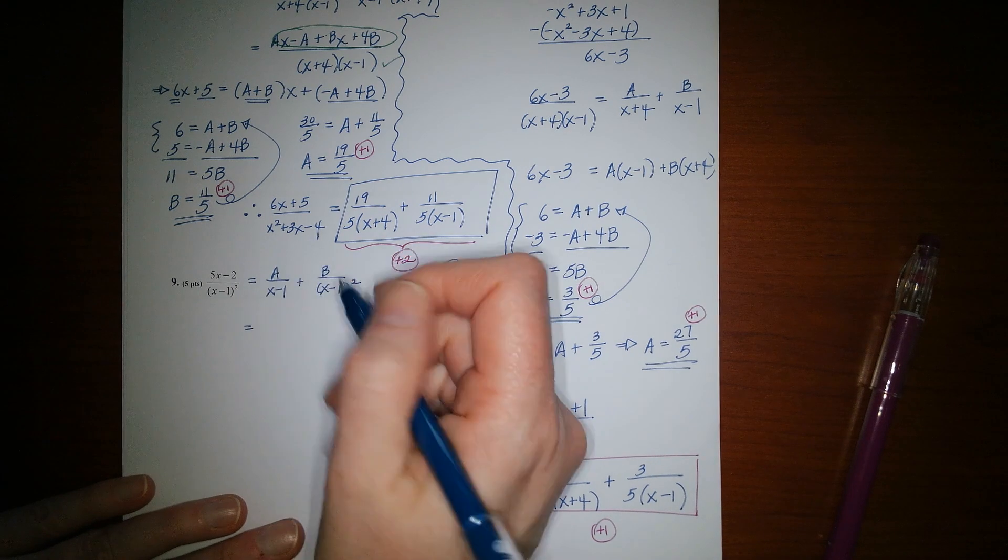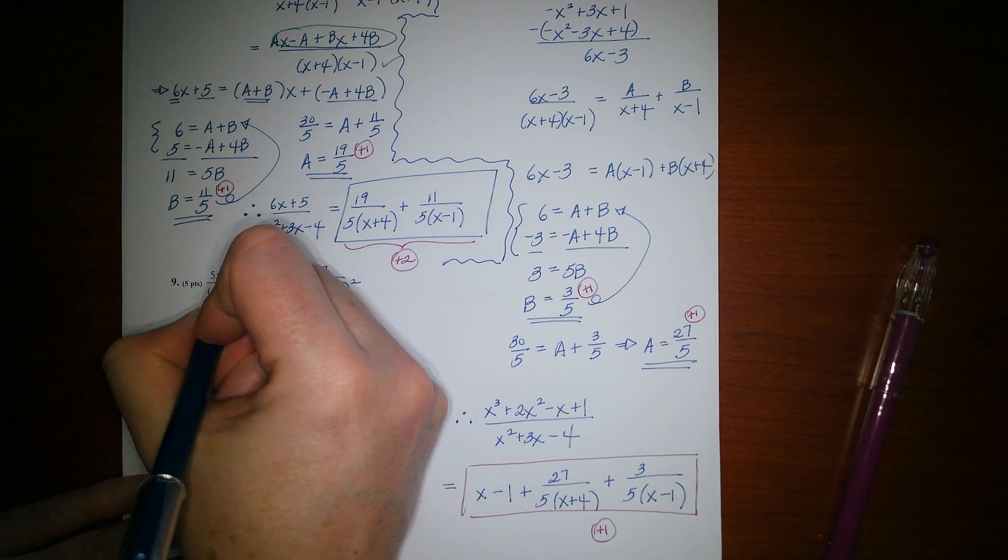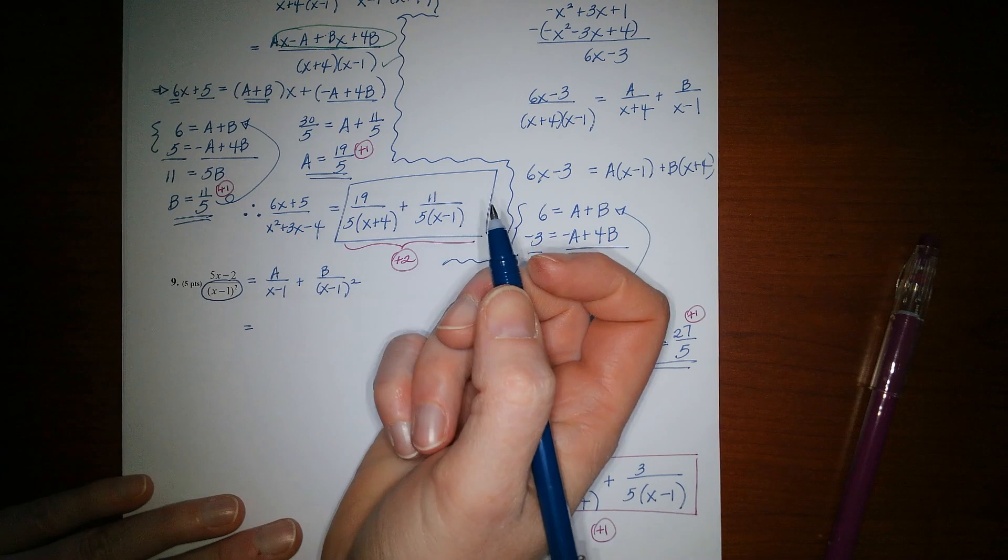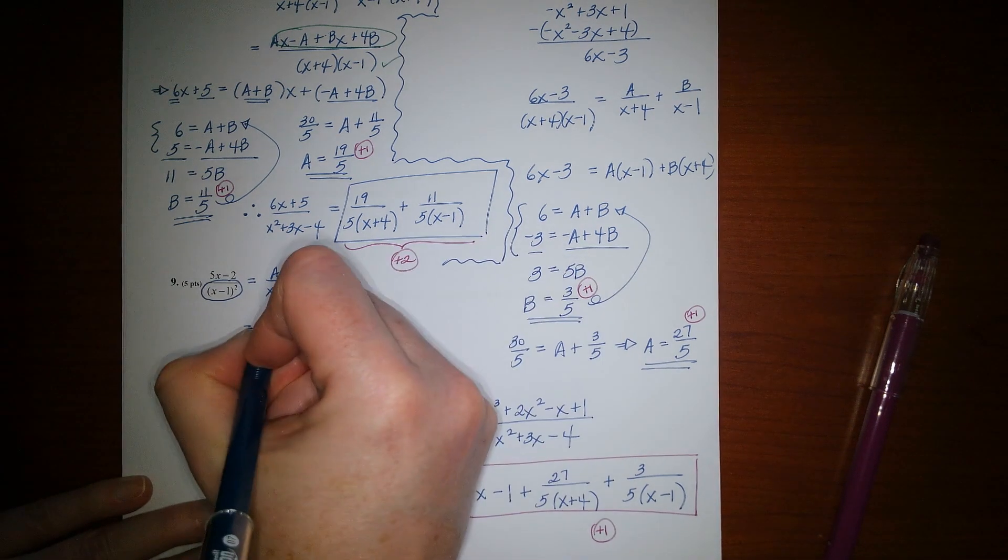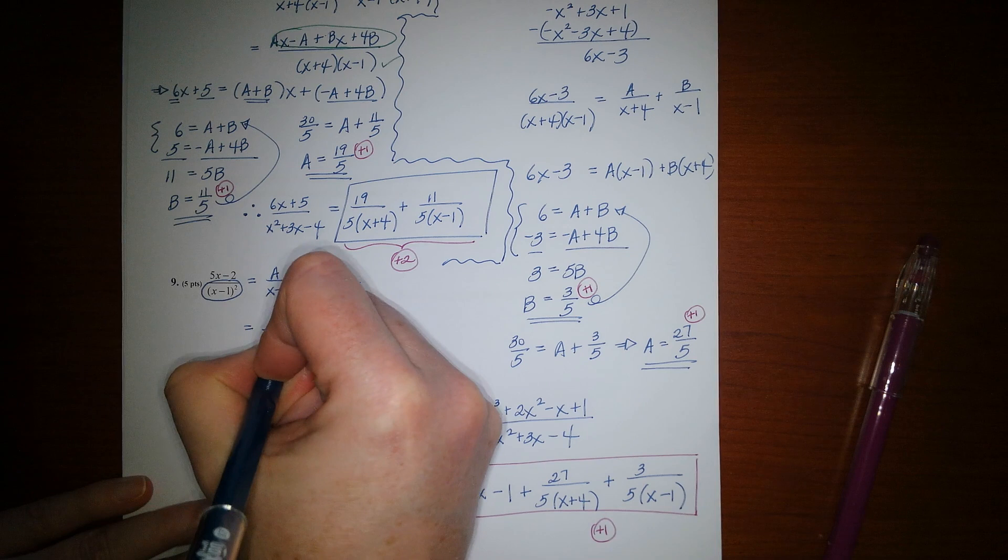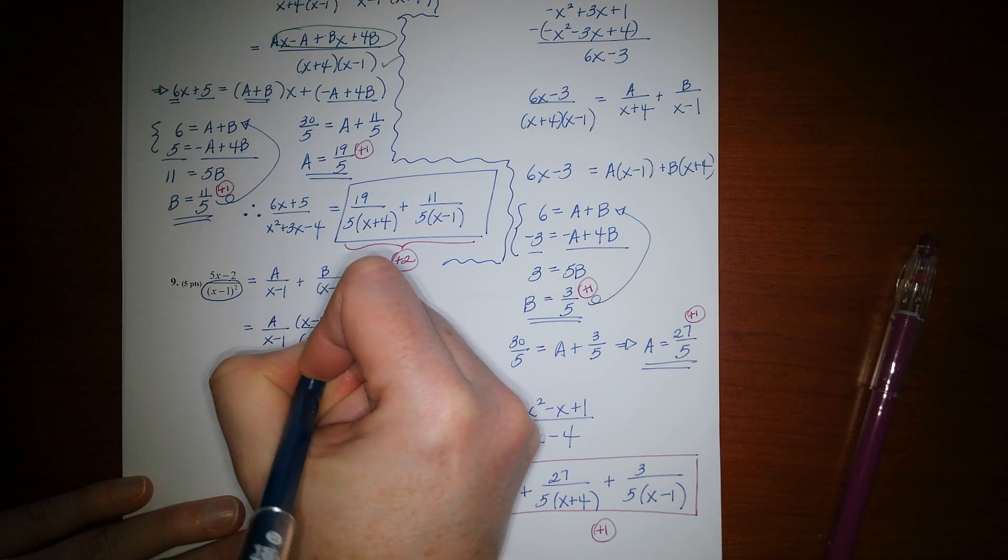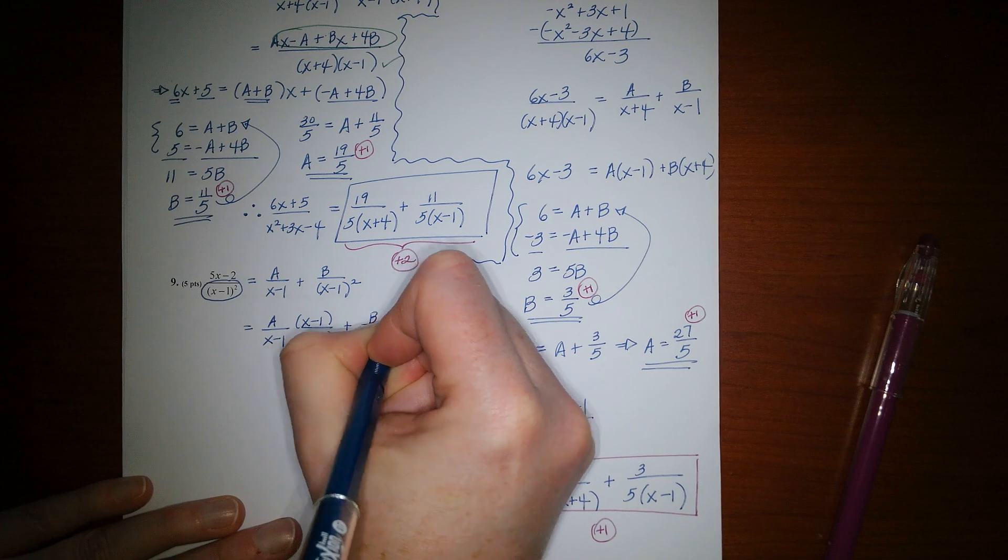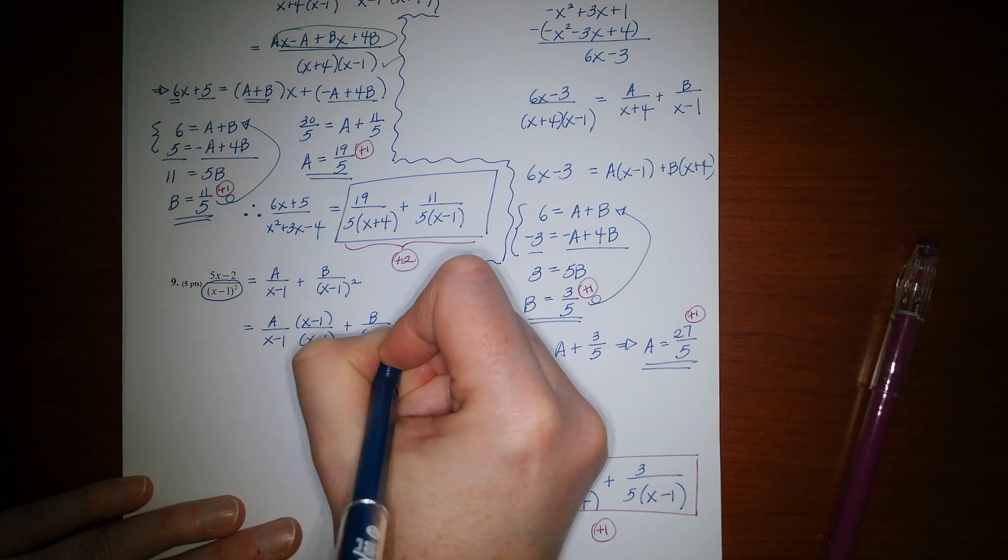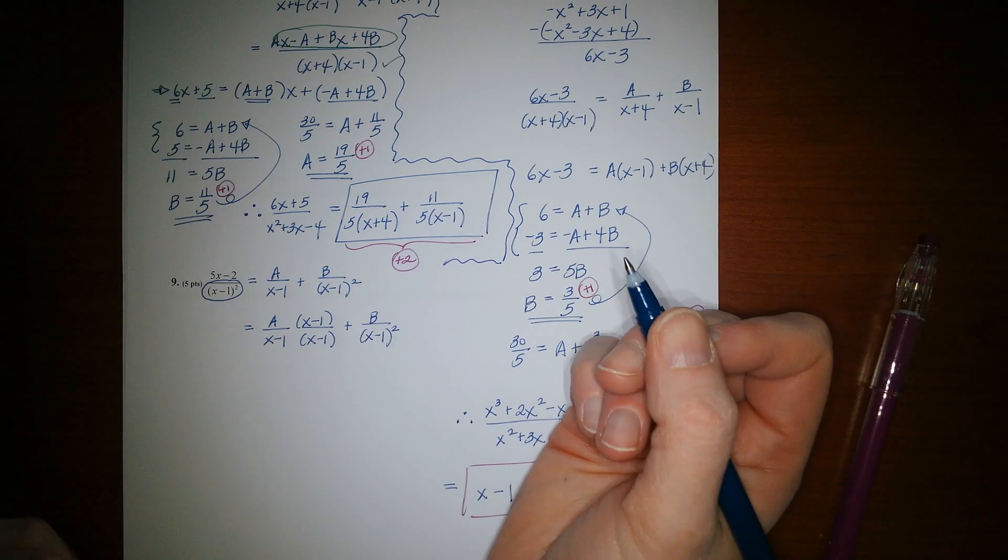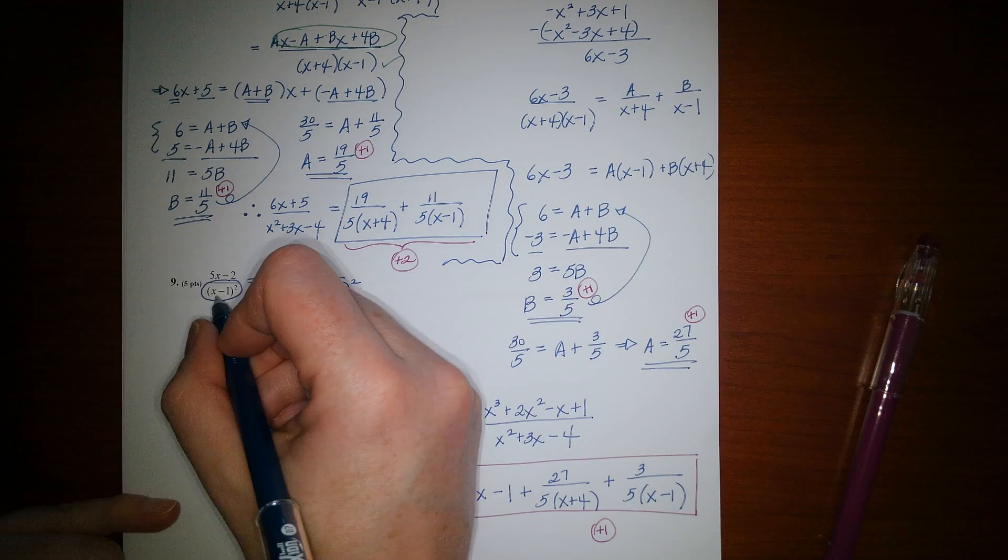Switching to adding fractions, make sure when you add these, you're getting this denominator. Not x minus 1 cubed. So for that reason, we take a over x minus 1, and you just need to multiply that by x minus 1 over itself. And then b over x minus 1 squared, it wouldn't need to be multiplied by anything at all, because it already has that denominator.